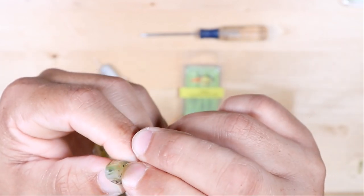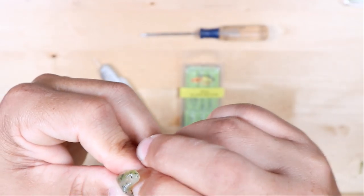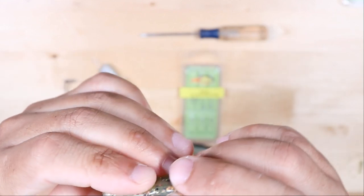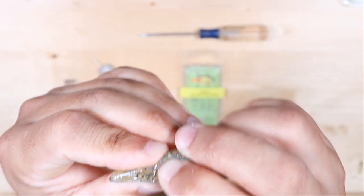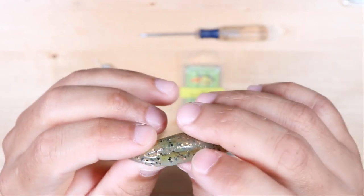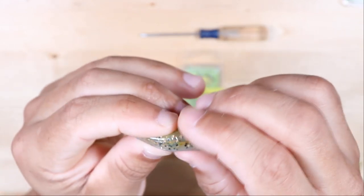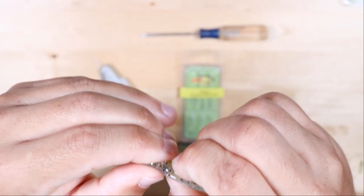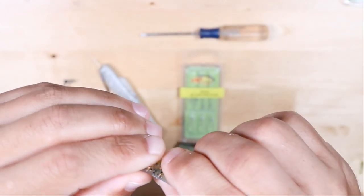As you're pushing it in, make sure you get it all the way in so that once it is in the lure, the plastic sort of goes around it near where you put it into the head of the lure.